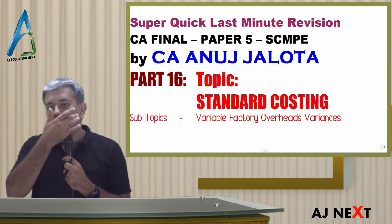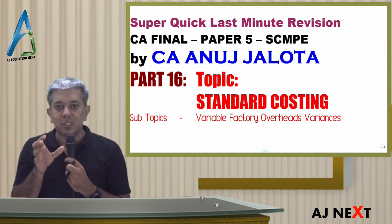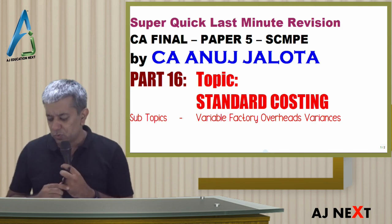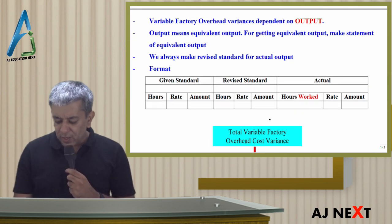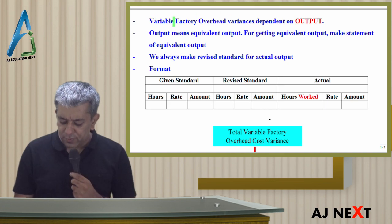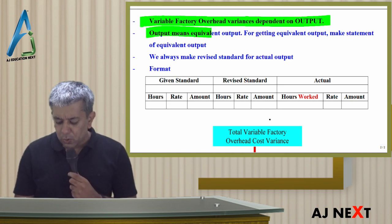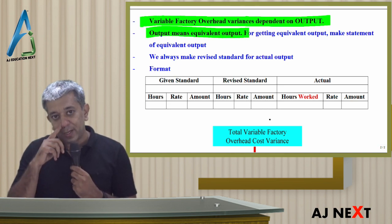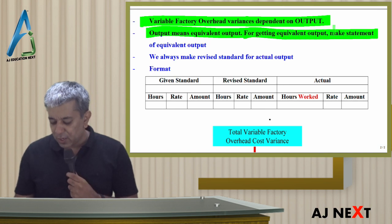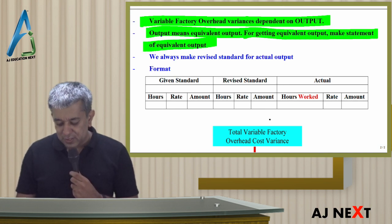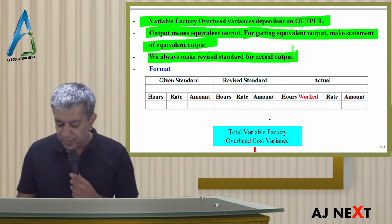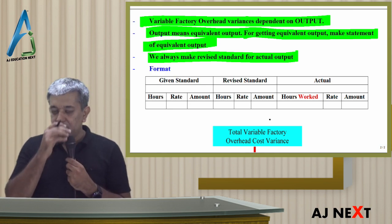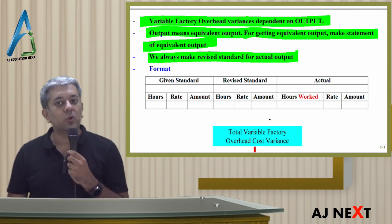This is almost the last thing, which is similar to what you get from material and labor. After that, things will be changing. First of all, Variable Factory Overheads are dependent upon Output — Output means Equivalent Output. For getting Equivalent Output, make a Statement of Equivalent Output. These lines are the same. We always make Revised Standard for Actual Output.